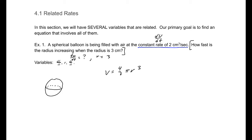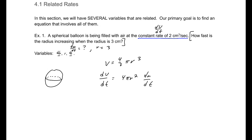We know dv/dt and we want to know dr/dt. So what we need to do is take the derivative of everything, implicitly. This will be dv/dt equals 4 pi r squared dr/dt. Every time we take the derivative of a variable, we put in the dr/dt or dv/dt — that is an implicit derivative.